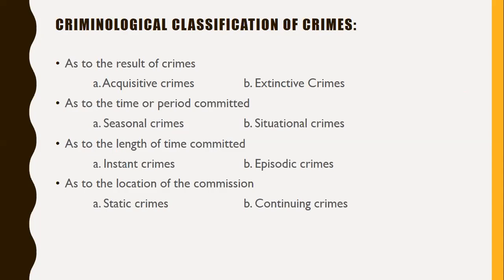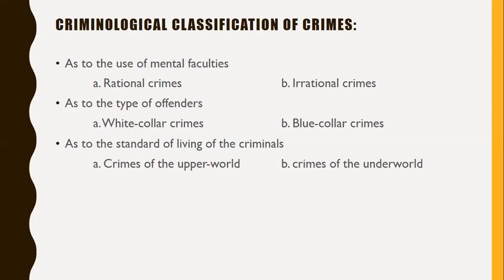As to the location of commission, we have static crimes — committed in only one place — and continuing crimes — committed in several places. As to the use of mental faculties, we have rational crimes — committed with intention where the offender is in full possession of their senses — and irrational crimes — committed by persons who do not know the nature and quality of their acts on account of mental disease.